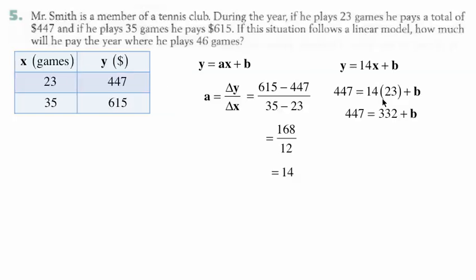All right, so the 14 multiplies the 23, giving us 332, and then to get the b alone, we're going to subtract 332 from both sides, and that gives us 125 is b. So our equation is y equals 14x plus 125.